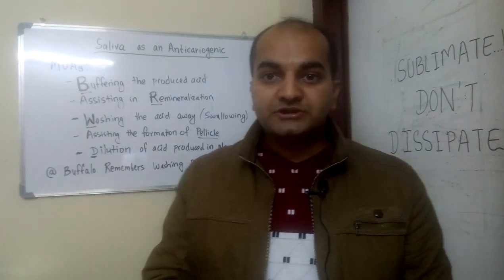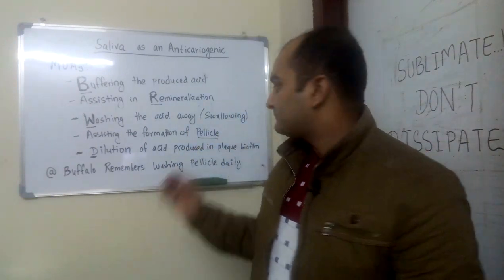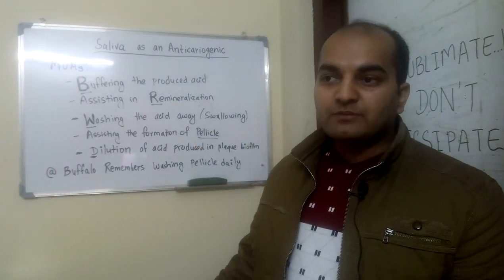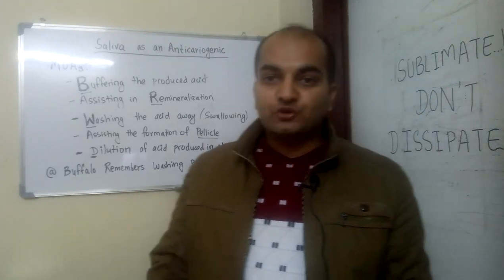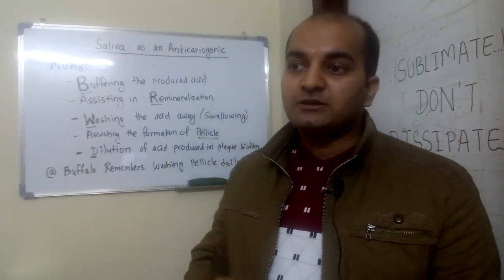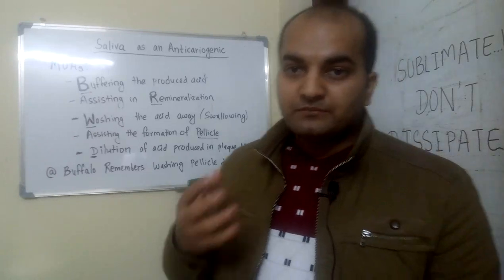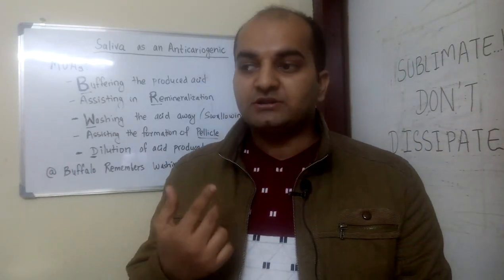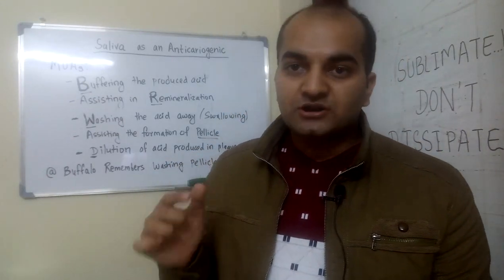Pellicle is an adhesion site for the cariogenic bacteria and it is the first step in the formation of dental plaque. The fifth mechanism is dilution of acid produced in the plaque biofilm — when the acid produced is diluted, the critical pH is never achieved.